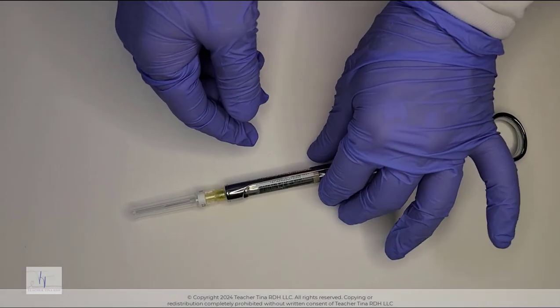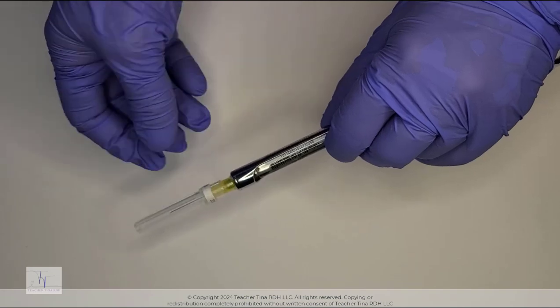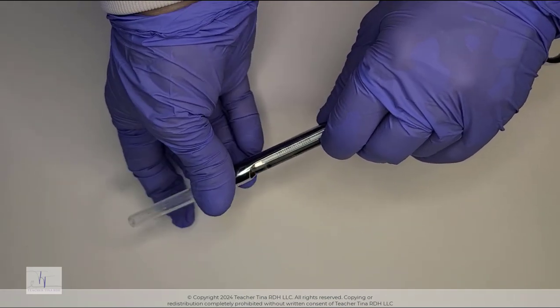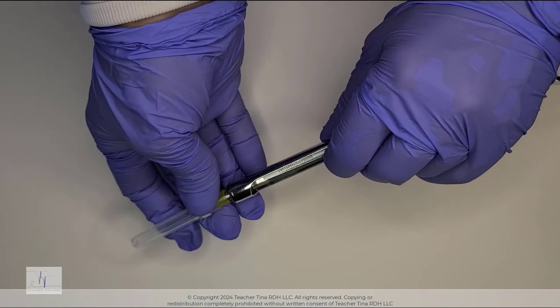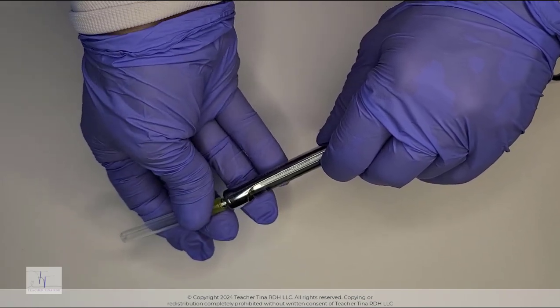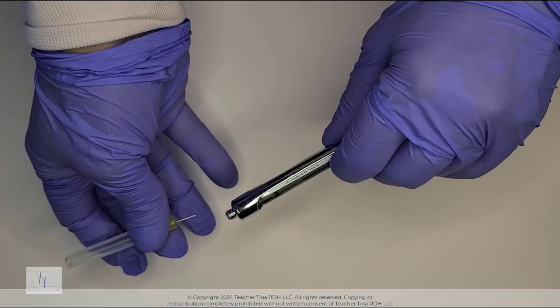When dismantling your syringe, safety is of the utmost importance. Be sure to unscrew the needle from the syringe near the needle adapter side where the hub of the needle is. This will keep your fingers safe from being poked. Place the needle into the sharps container.